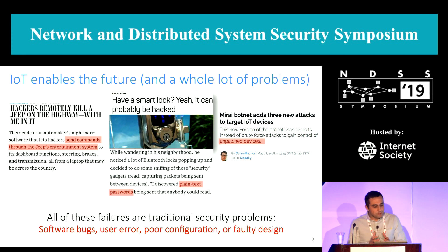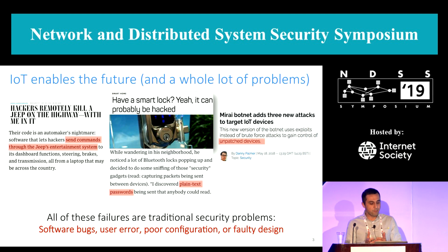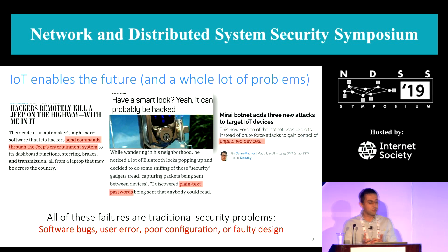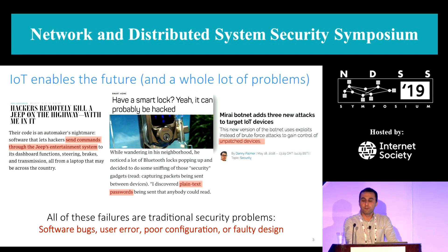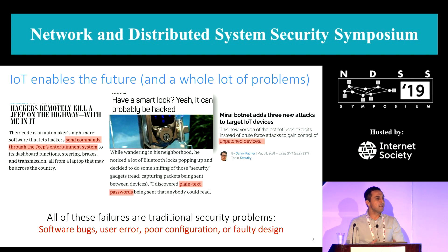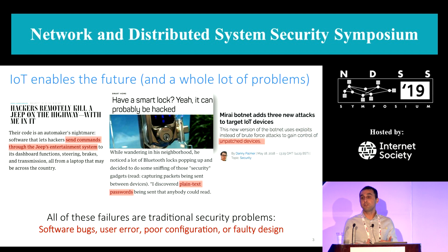When we look into the reasons to understand how exactly these issues happen, what we see is similar to traditional computer security problems — many of these failures are consequences of software bugs, such as exploiting a software vulnerability in a car's multimedia system, or user error, poor configuration, or flawed design, such as sending passwords in plain text or failure to timely apply security patches.